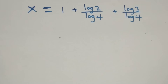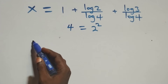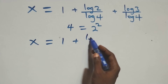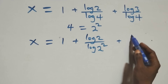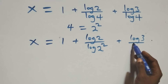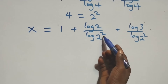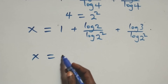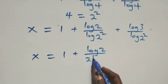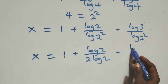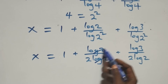Here we can write 4 as 2 times 2, which is the same thing as 2 squared. This becomes x equals to 1 plus log 2 over log 2 squared plus log 3 over log 2 squared. Then we apply the power rule of logarithm: the 2 comes down, giving x equals to 1 plus log 2 over 2 log 2 plus log 3 over 2 log 2. Log 2 cancels in the first fraction.